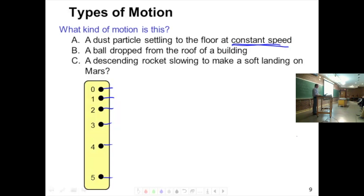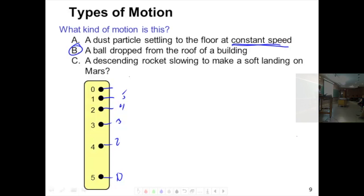C, a descending rocket slowing to make a soft landing on Mars. How can I make this picture that? In red, flip it upside down. Flip it upside down. If I have one, two, three, four, five, I guess zero, whatever, then that would be the picture. So B is the answer. Here we go.